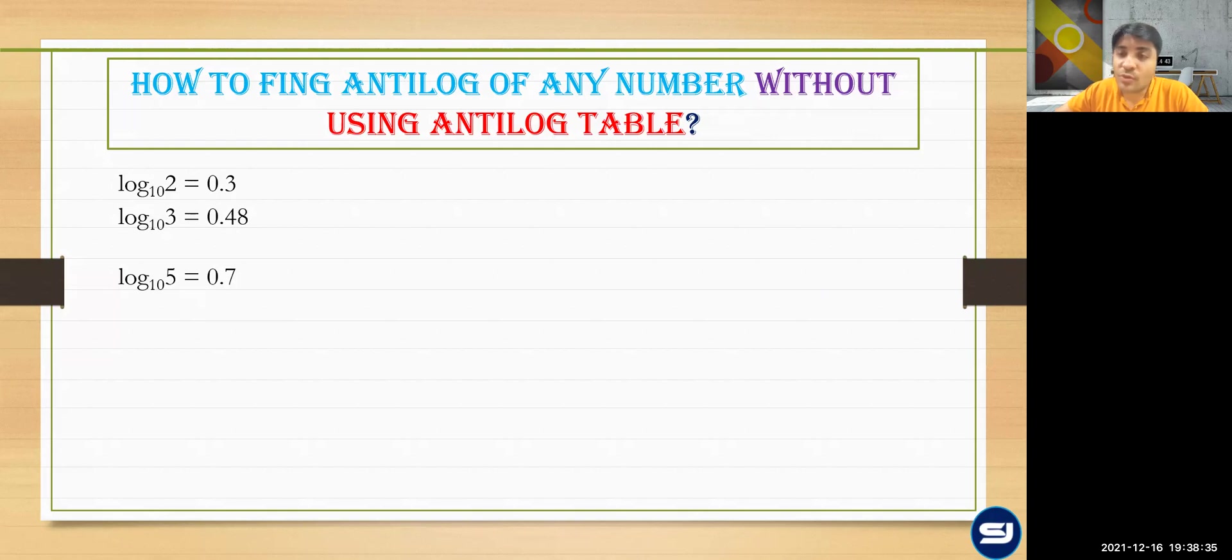So in that you were supposed to remember the logs of three numbers: that's log 2, which is 0.3, log 3 which is 0.48, and log 5 which is 0.7.